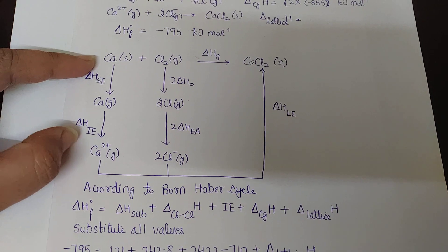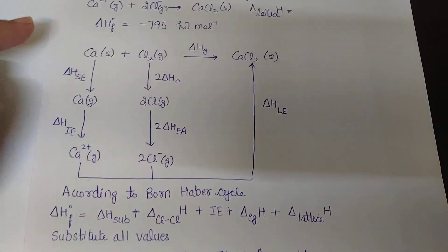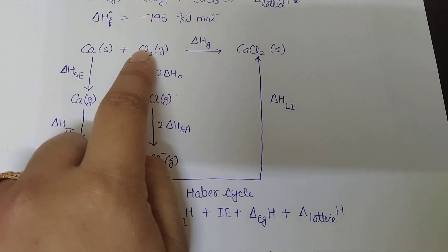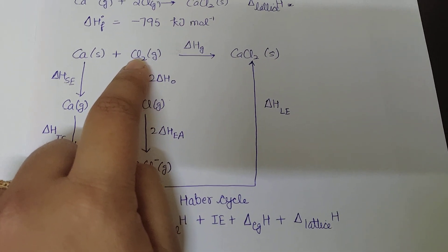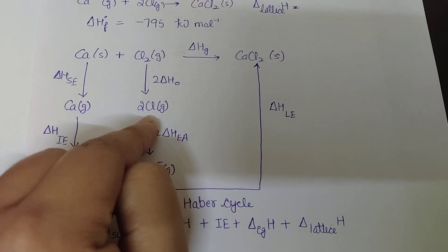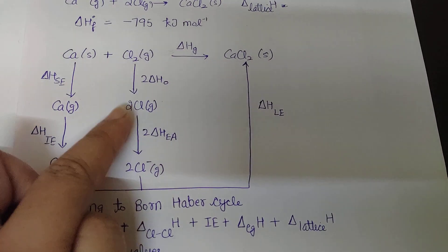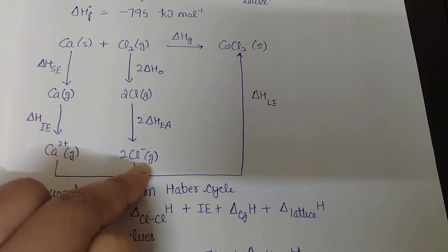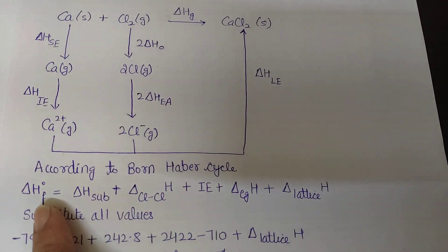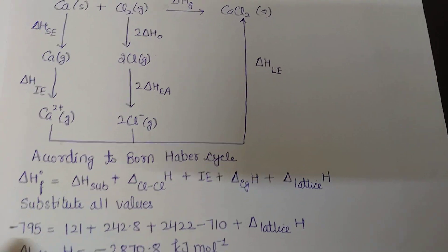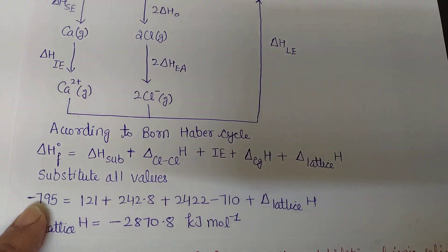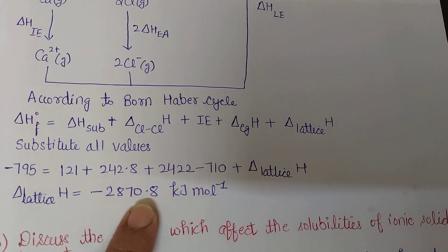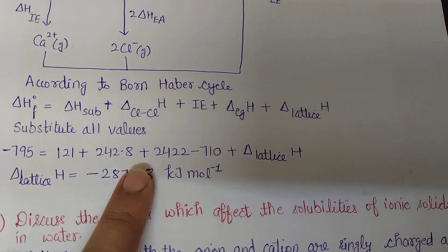Here is the cyclic form of the calcium chloride formation used to find the lattice energy. First, calcium is formed in gaseous form, then it gets ionized. Similarly, chlorine is already in gaseous form but must be dissociated into single moles — a total of two moles — and then gets ionized. The total heat of formation is already given as minus 795 kilojoules per mole, and the lattice energy can be found by adding the given values.